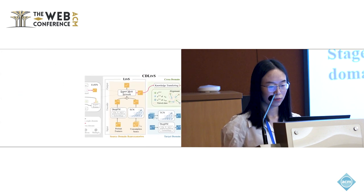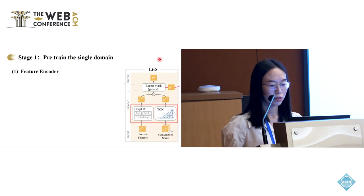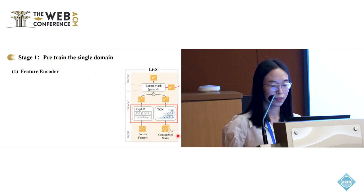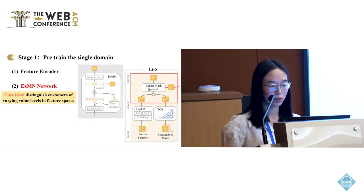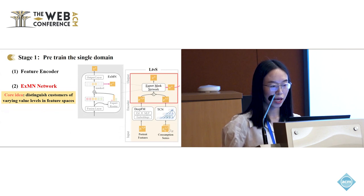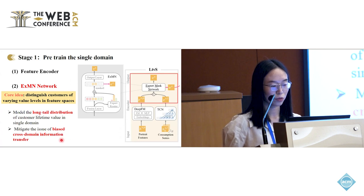The stage one training method is called LTVS. Our single domain pre-training method employs the DFFM and the temporal convolutional network to encode the input data, customer portrait features, and consumption series. It then fuses the encoded embeddings and employs the expert mask network, XMN, to output the single domain representation and the customer lifetime value. The XMN has a special design to distinguish customers of varying value levels in the feature space, which provides the model with more opportunities to learn and generalize effectively from the tail data, addressing the long-tail distribution problem and mitigating biased cross-domain information transfer.